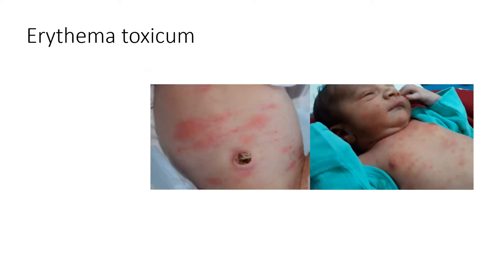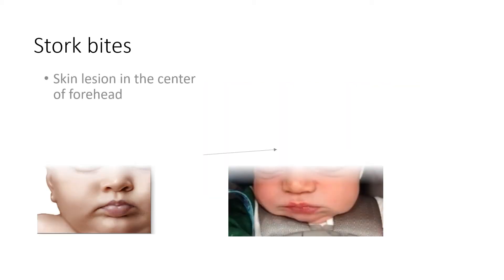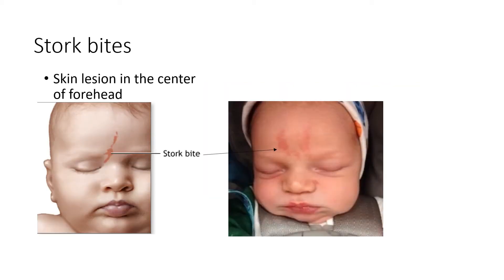Now let us go to erythema toxicum. As can be seen, erythema toxicum has erythematous rashes appearing anywhere but mainly on the trunk.